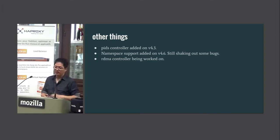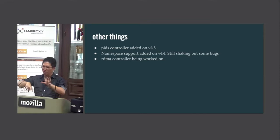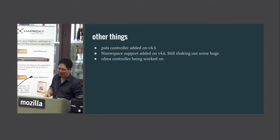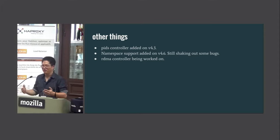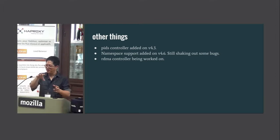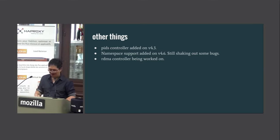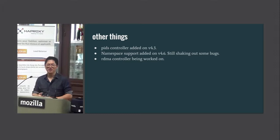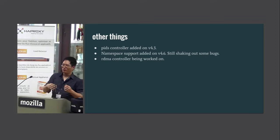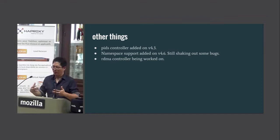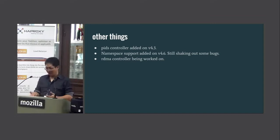Cgroup namespace support was added in 4.6. Before, you could bind mount a cgroup subtree inside the container and pretend it's your own hierarchy, but it wasn't quite transparent — if you did 'cat /proc/self/cgroup' it would show the full path which ignores the bind mount. What cgroup namespace support does is remove that inconsistency. If you're in a namespace including cgroup namespace, you can look at /proc/self/cgroup and your path would match the root of your namespace. There are some bugs being worked out, but people are pretty happy with it.